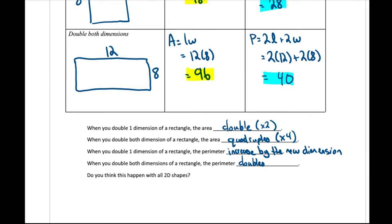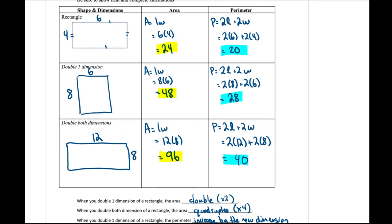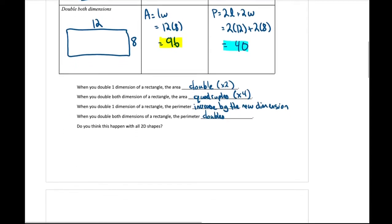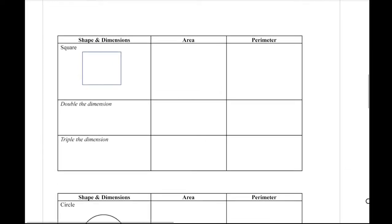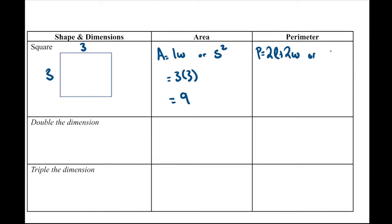Do you think this will happen with all 2D shapes? We're going to look at two different two-dimensional shapes — a square and a circle — and go through basically the same process to see what happens to the area and perimeter. If we look at a square, let's say three by three: the area equals side squared, which is three times three equals nine. For perimeter, four times the side length gives us four times three, which equals 12.